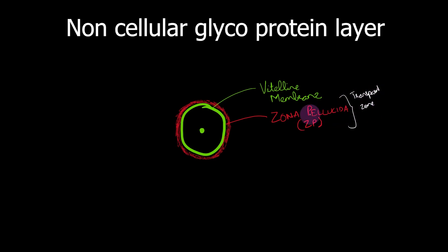Pellucida means transparent and zona means zone. That is zona pellucida. So it is a non-cellular layer. It is transparent and it is seen around the oocyte.